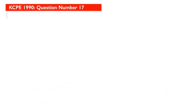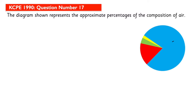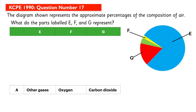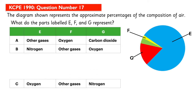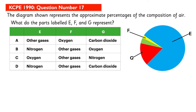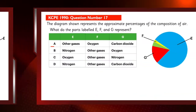The diagram shown represents the approximate percentages of the composition of air. What do the parts labeled E, F, and G represent? The answer is B.